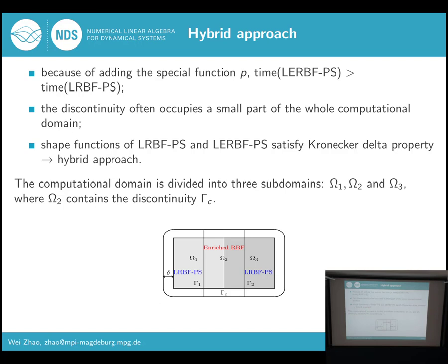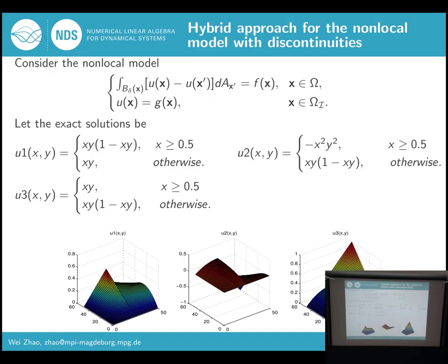For the hybrid approach, the challenge is handling the function at the interfaces. For our problem there are two interfaces. Because LRBF and LERBF satisfy the cardinal data property, we can use this method directly by introducing a RAMP function. We then consider this model with a very special kernel — one specific function. We define three different exact solutions, and from the figures we can find that the first derivative of these functions jumps at the discontinuities, so their continuities are in weak form.